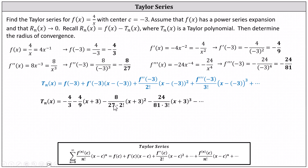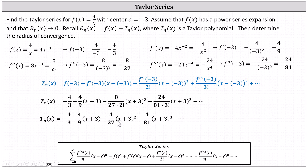Next we simplify the fractions involving the factorials. Two factorial is equal to two. Eight divided by two is four. This simplifies to negative four divided by 27 times the square of x plus three. Three factorial equals three times two times one, or six. Twenty-four divided by six is four. This simplifies to minus four divided by 81 times the cube of x plus three.